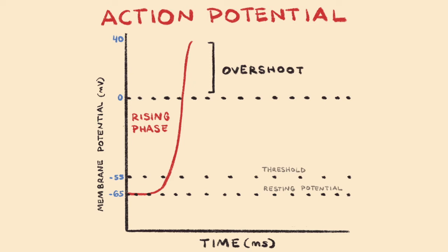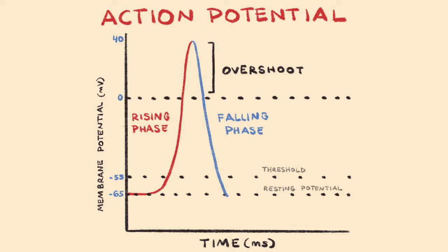Remember, the neuron was negatively charged at rest. The falling phase includes the parts of the action potential where the inside of the neuron goes back towards being negatively charged. This also includes the undershoot, whereby the inside of the neuron becomes temporarily more negative than the normal resting membrane potential.